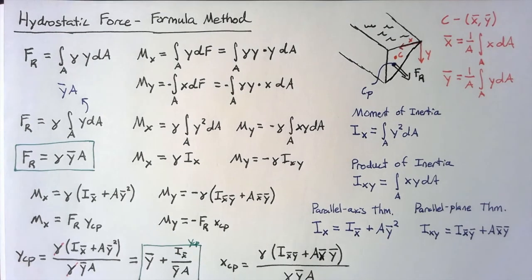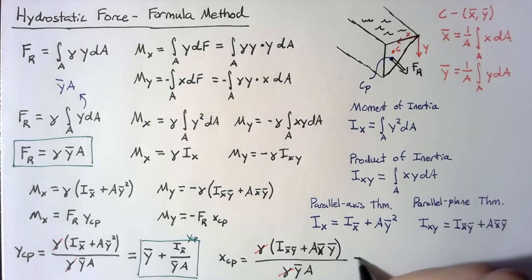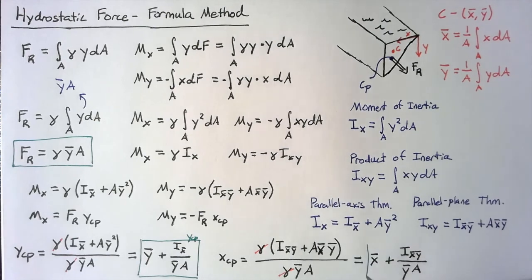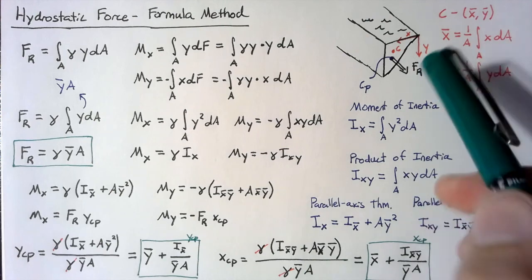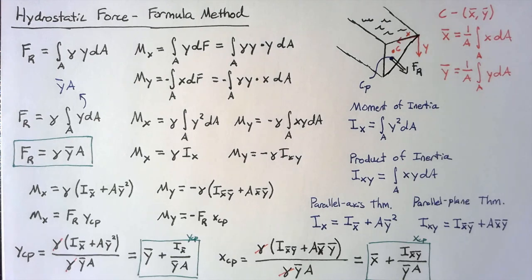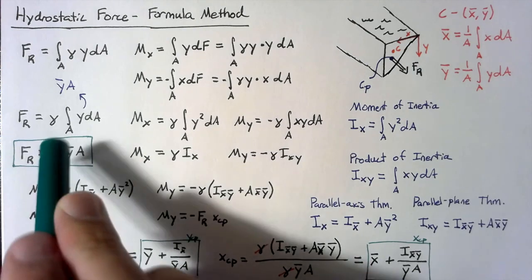We do the same thing to find x_cp by taking our equation for M_y and dividing by F_R. The negatives cancel out, the gammas cancel, and the A·y-bar terms cancel in the second part, leaving x-bar plus I_x-bar·y-bar divided by (y-bar·A). So x_cp equals x-bar plus I_x-bar·y-bar divided by (y-bar·A). If you have values for the centroid and for the moment and product of inertia about the centroid, you can determine both the location and magnitude of the resultant force using these three equations.